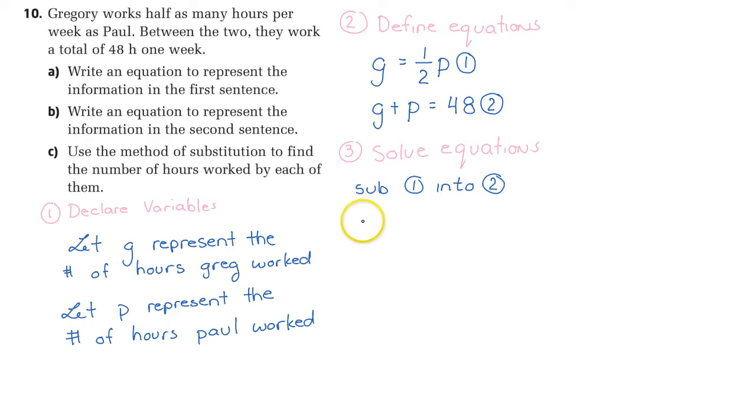Therefore, one half P plus P equals 48. Now I'm going to clear the fractions by multiplying both sides by 2. If we multiply each term by 2, P plus 2P equals 48 times 2 is 96. 3P equals 96. We're going to divide both sides by 3. P is equal to 32.